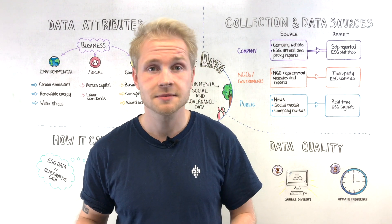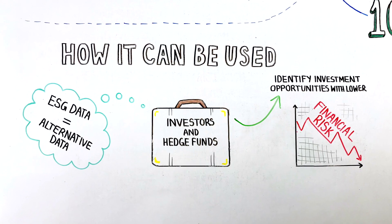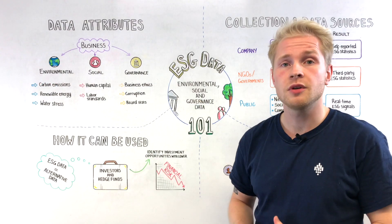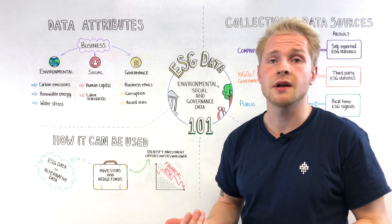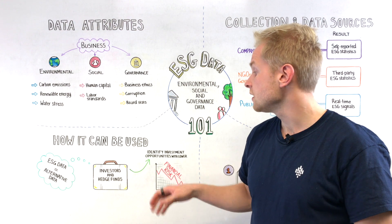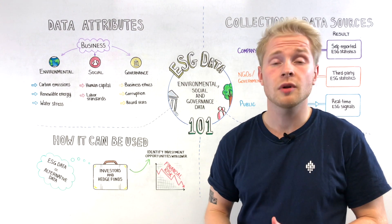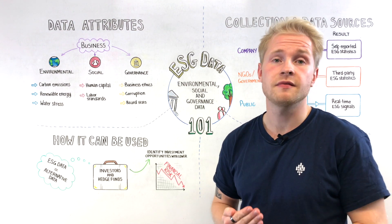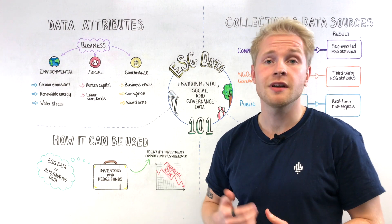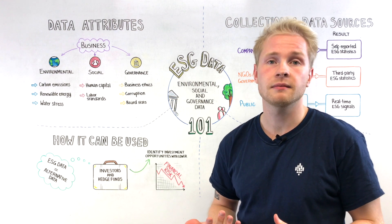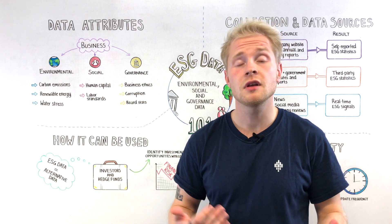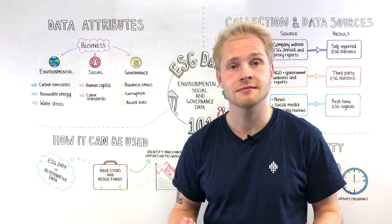To the use cases. Essentially, ESG data is a form of alternative data that can be used in company analysis. This is why investors and hedge funds are using it to identify low-risk business investment opportunities based on the company's promising environmental and ethical aspects. This was just an example of a use case — if you can think of another one, let us know in the comments.